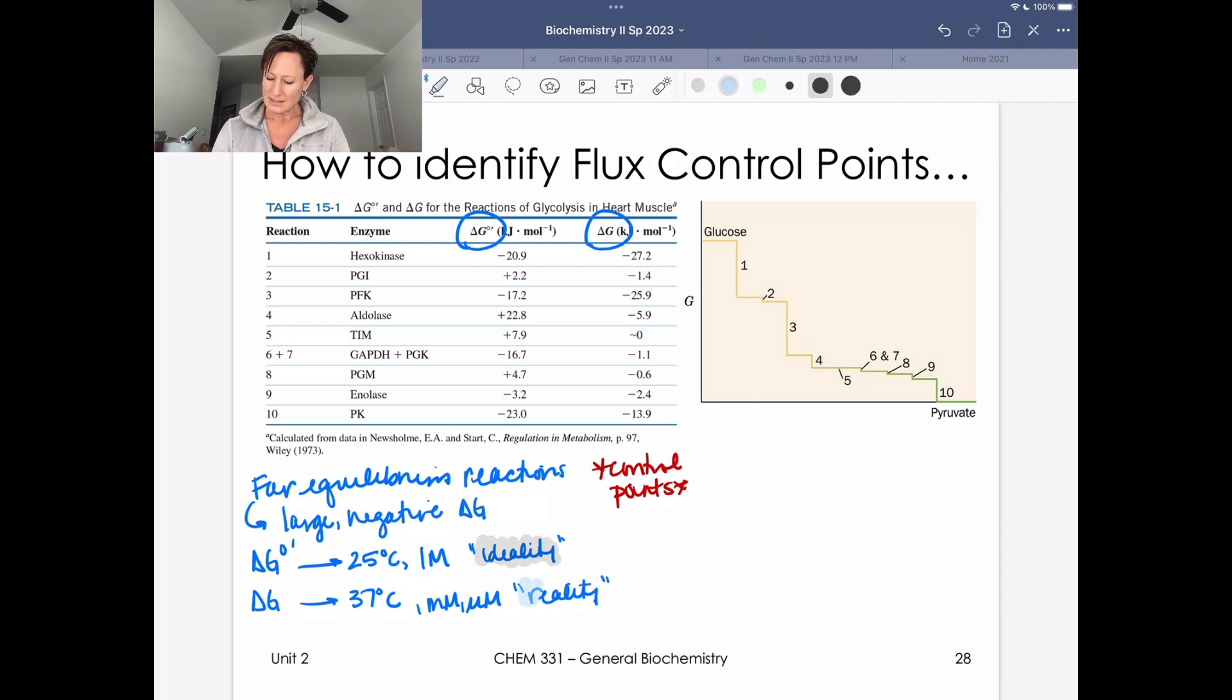And so the reality is that we are going to be looking at delta G values. So just keep that in mind that we are not going to be considering delta G not prime values because they don't represent the reality of the conditions that we're operating under. Okay, so we're looking for large negative delta G values that we have in a metabolic pathway.